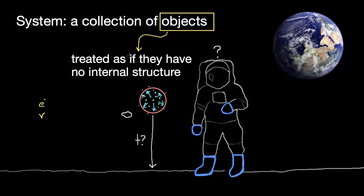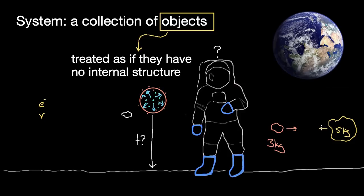Unless you're doing particle physics, you probably don't have a true object, but you can treat things like an object. We can treat this basketball like an object — that is, act as if it has no internal structure, if that internal structure isn't relevant to the problem. As another example, say you collide a three kilogram putty with a five kilogram object, and they stick together and move off with some common speed.